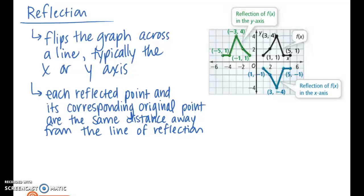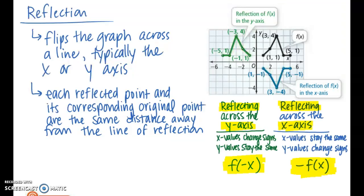Now let's talk about reflections. When performing a reflection, you're flipping the graph across a line, typically the x- or y-axis. Each reflected point and its corresponding original point are the same distance from the line of reflection. When you reflect a graph in the y-axis, the x values change signs and the y values stay the same, so the new coordinates use f(negative x). When reflecting across the x-axis, the x values stay the same and the y values change signs, so you multiply the output values by negative 1.